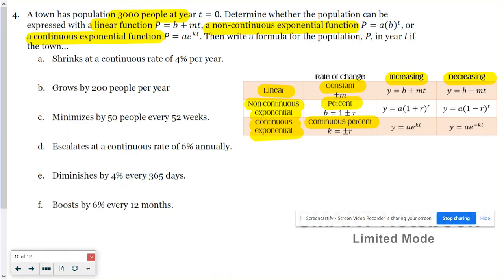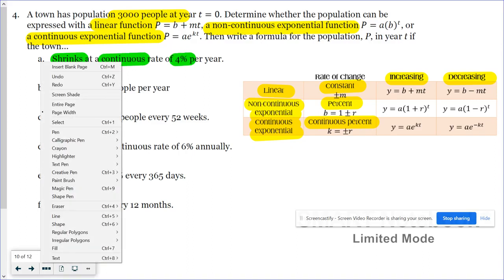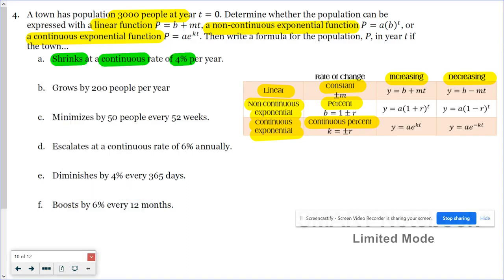Scenario A says it shrinks at a continuous rate of 4% per year. Did you catch it? They said continuous. So that means we're dealing with a continuous exponential function. And they said it's shrinking, so that means it's a decreasing continuous exponential function. My population function is going to look similar to y equals a times e to the negative kt power.